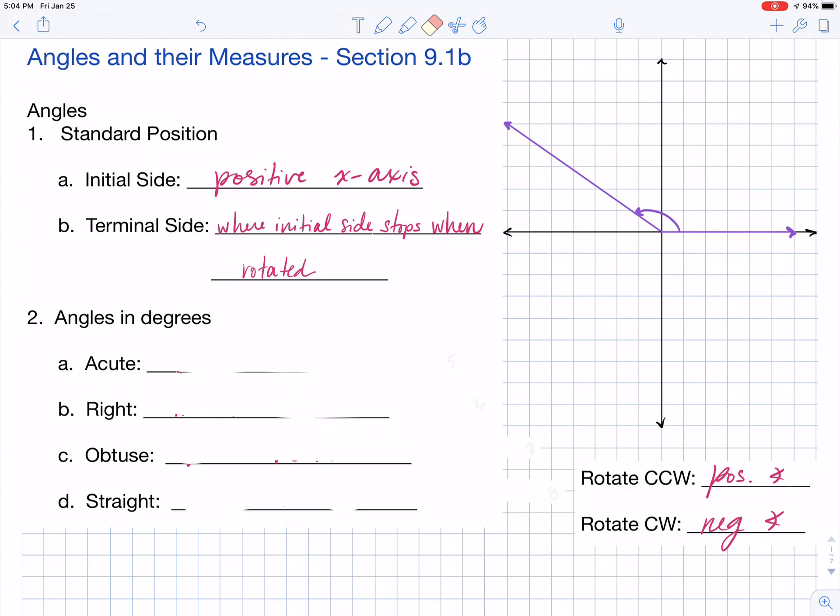First of all, an acute angle we know is an angle that's smaller than 90 degrees. A right angle is exactly 90 degrees. An obtuse angle is larger than 90 but also smaller than 180, and a straight angle is exactly 180 degrees.